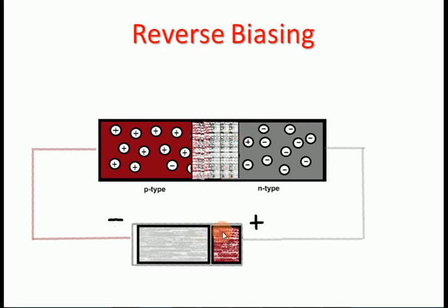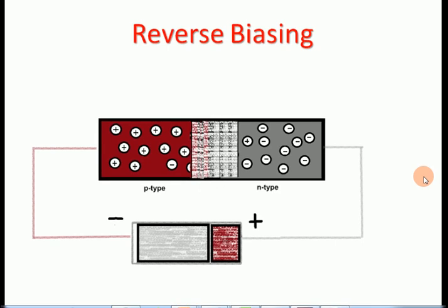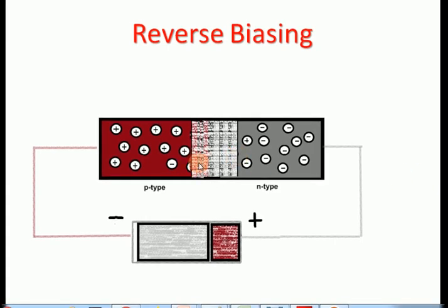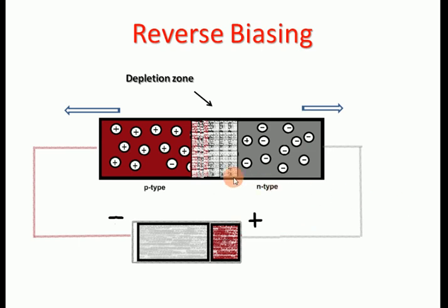In reverse biasing, the P-type is connected to the negative terminal and the N-type is connected to the positive terminal. This causes holes and electrons to move away from the junction, resulting in the depletion region getting wider. The P-type attracts holes toward the negative terminal and electrons attract toward the positive terminal, resulting in a wide depletion layer. That is why a PN junction diode does not conduct in reverse biasing.